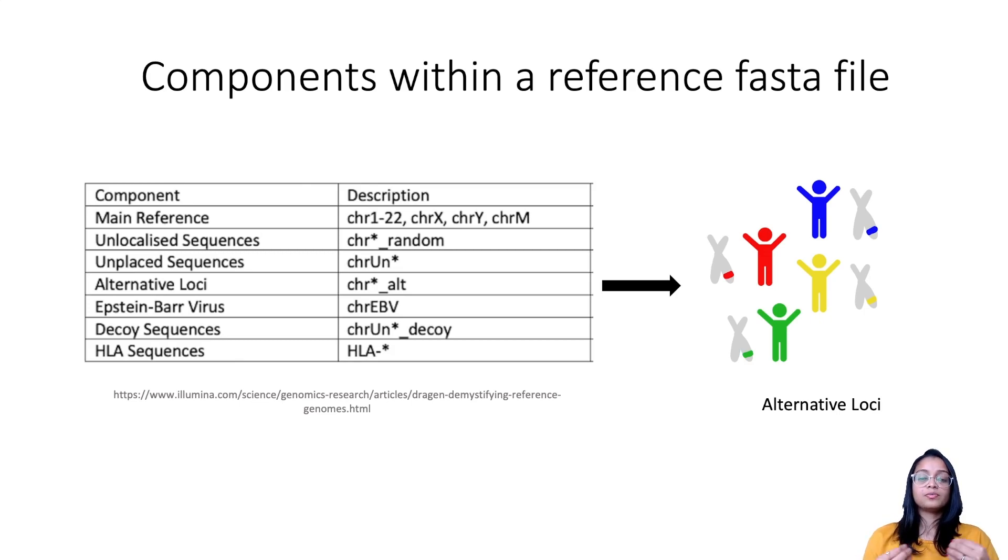In addition to alternative loci, we have sequences for Epstein-Barr virus. The Epstein-Barr virus sequences are endogenously found in most of the population as this virus naturally infects B cells in around 90% of the world population. In addition to that, we have decoy sequences and these sequences are ones that could not be placed on chromosomes when the reference genome was put together. Much of the decoy sequences consist of repeats that are difficult to assemble. And lastly, we have sequences corresponding to HLA regions. These are the sequences for various HLA types.